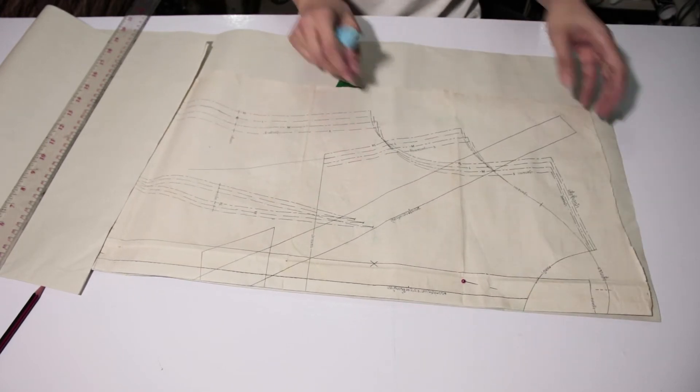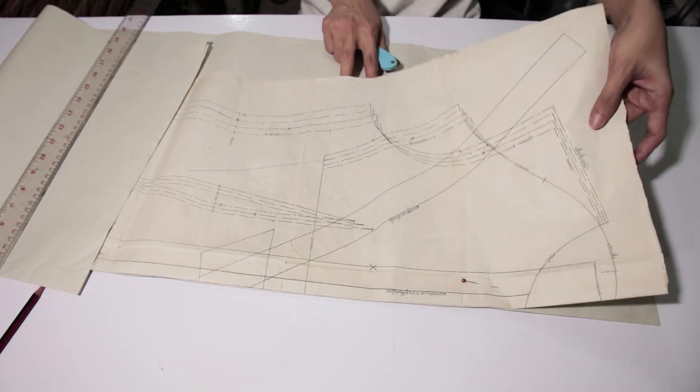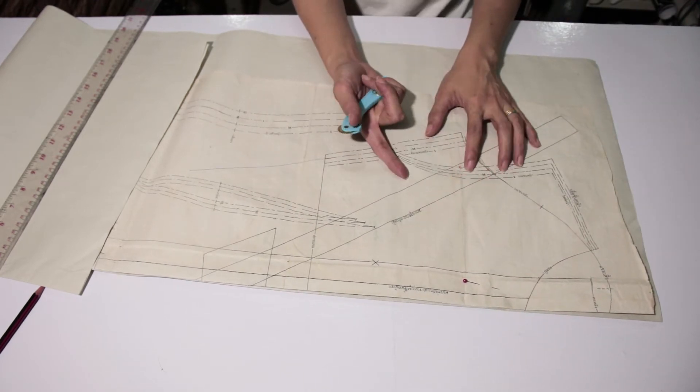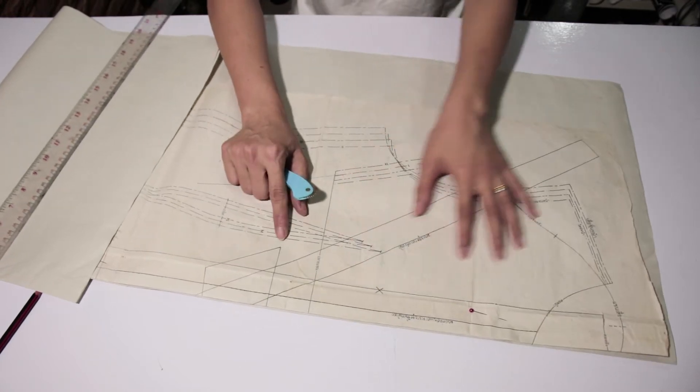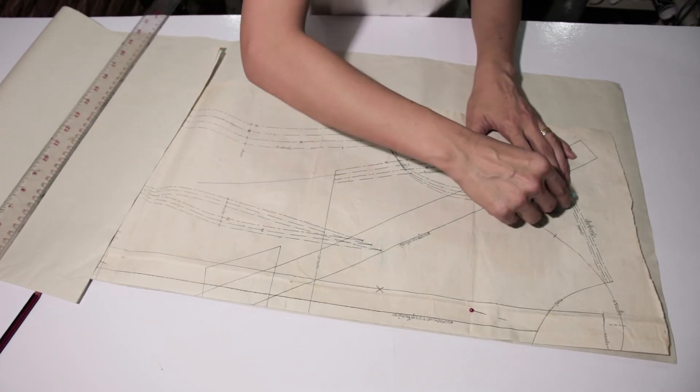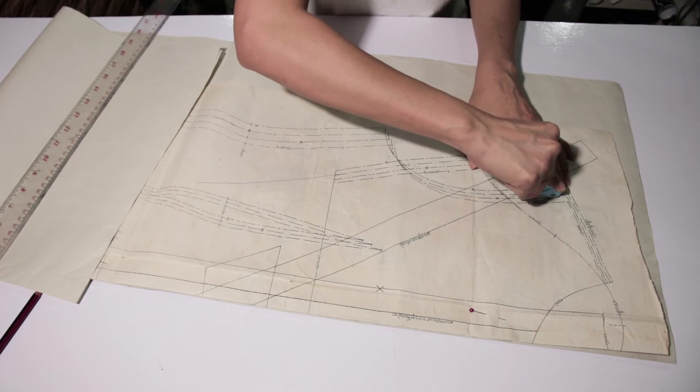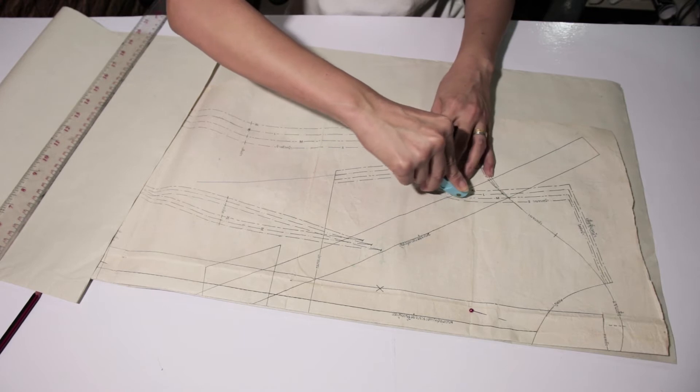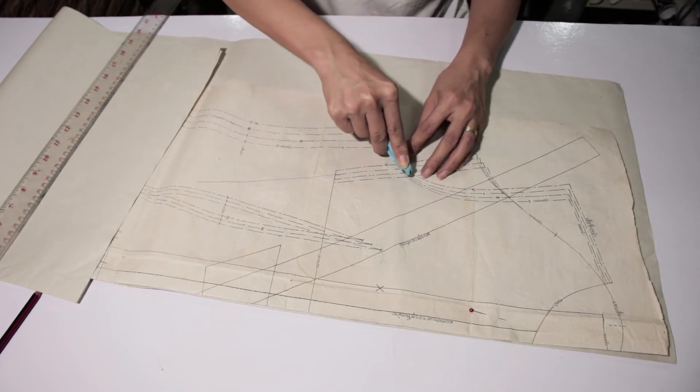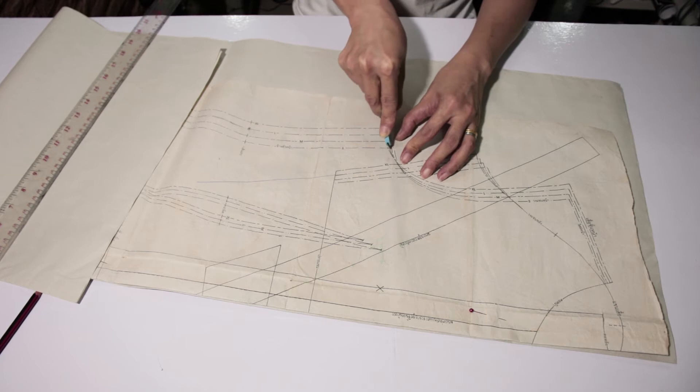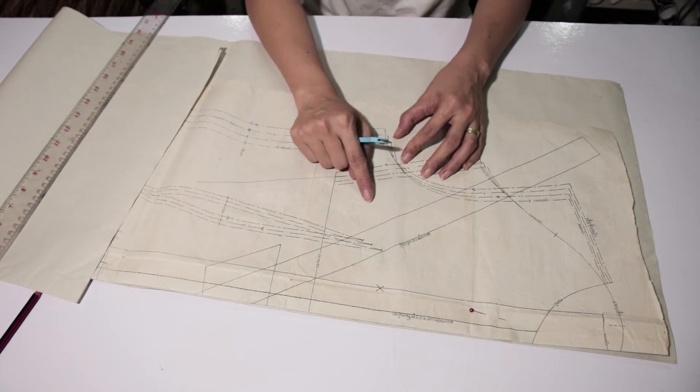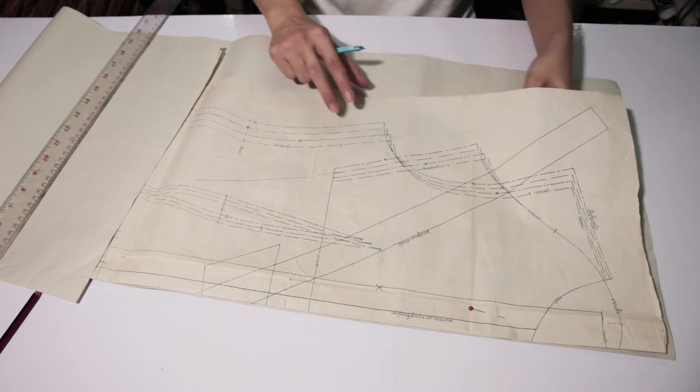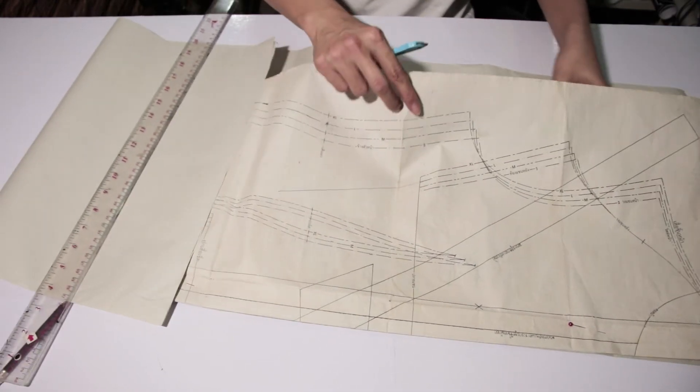And you might wonder why don't I just trace the pattern directly on my fabric. The reason is because in the future, I might change the pattern. Maybe I want to make my dress in the form of princess dart or something like that. And I don't want to cut this original pattern. So what I'm going to do, I just cut this part and reuse this one. I can reuse it again and again.